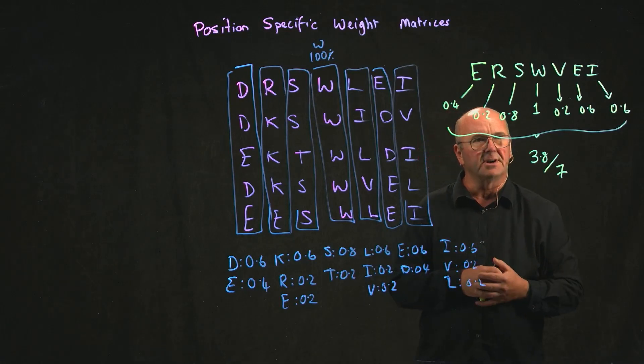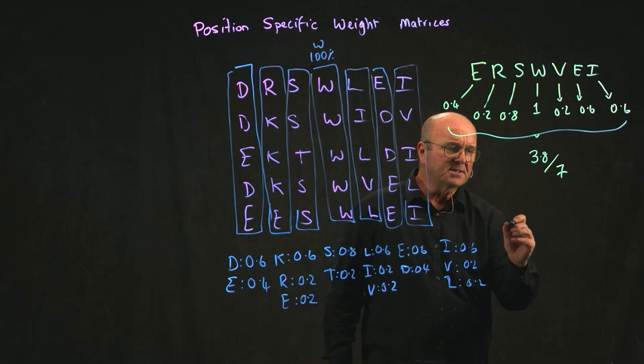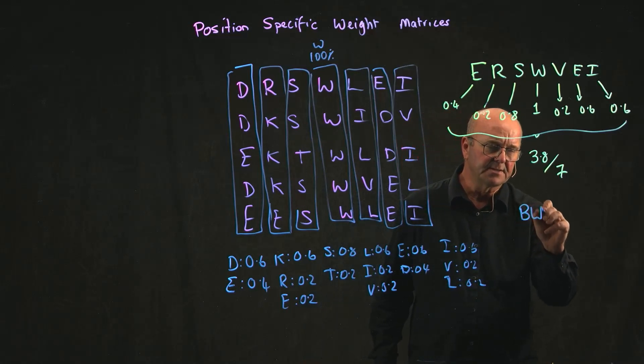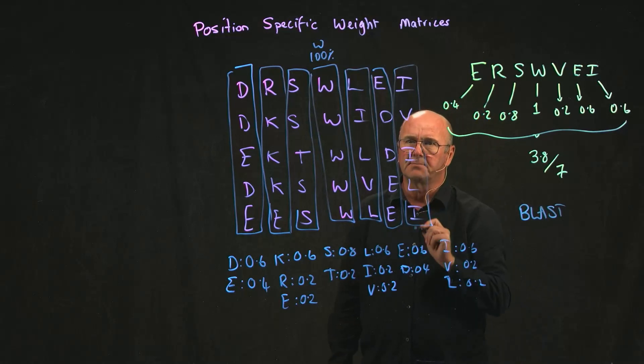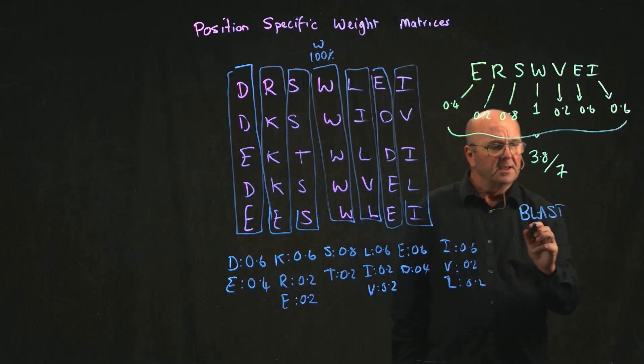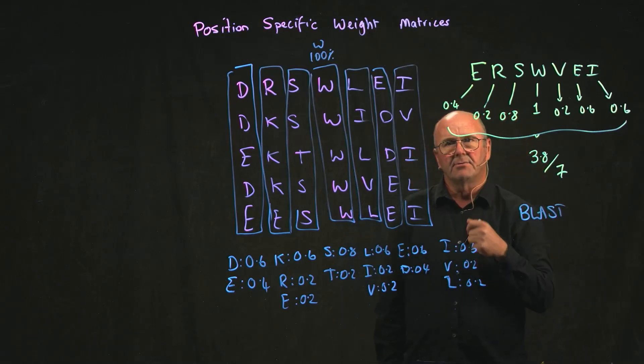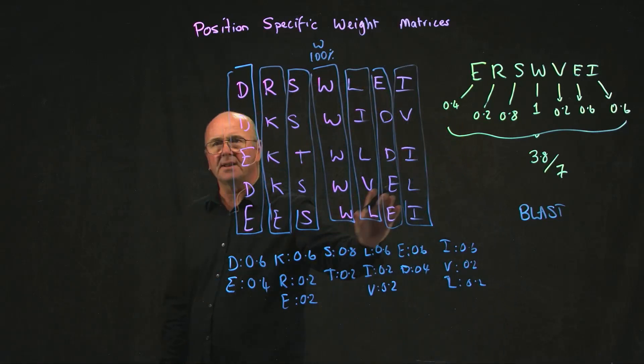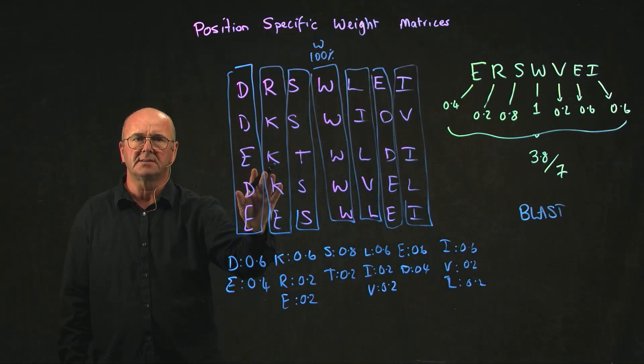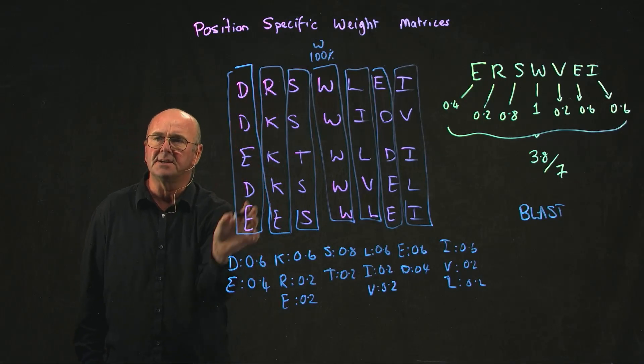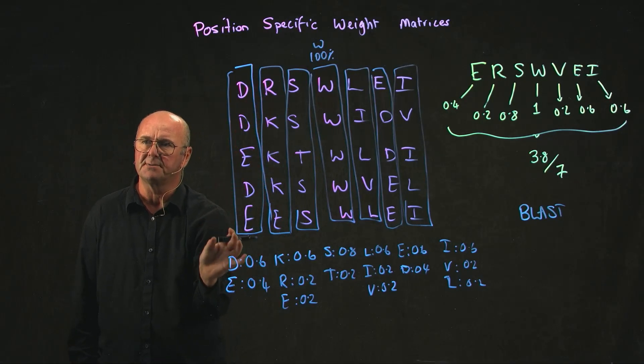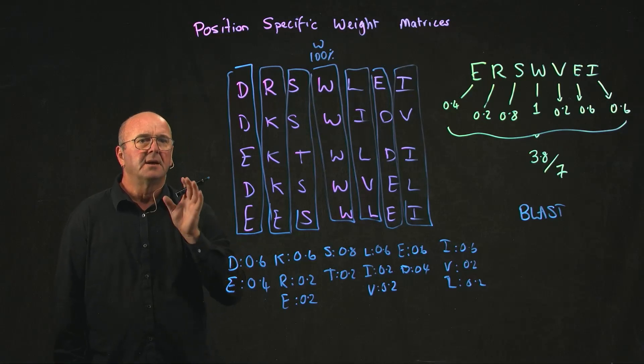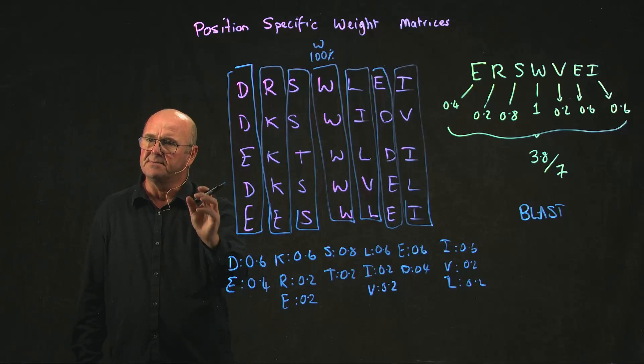So the BLAST suite has a position-specific weight matrix algorithm built into it. You can run BLAST, for example, a protein BLAST, generate a series of alignments like this, and use those alignments to then design your own position-specific weight matrices and use those to query the database to find other proteins that are similar to the one that you've already found.